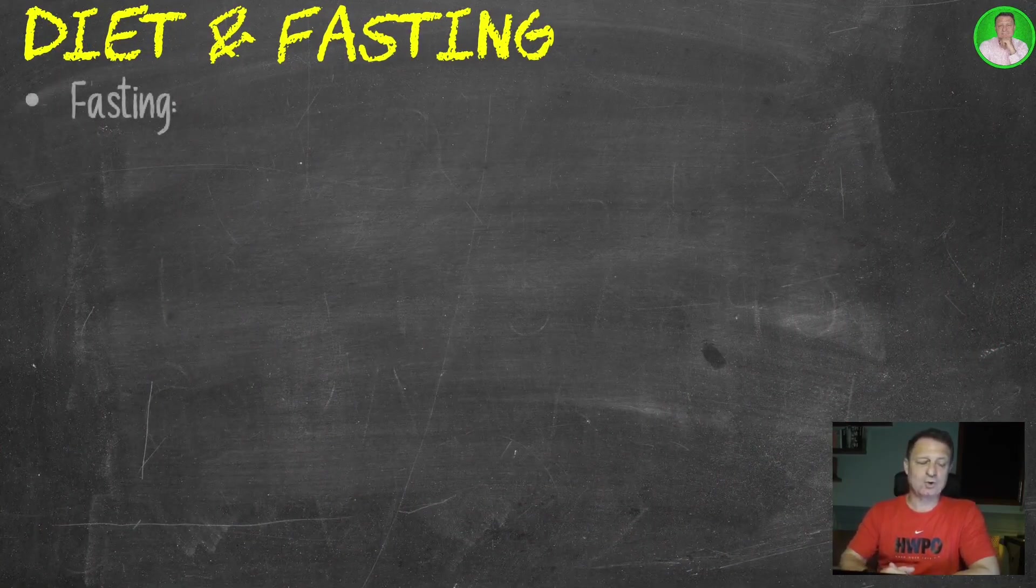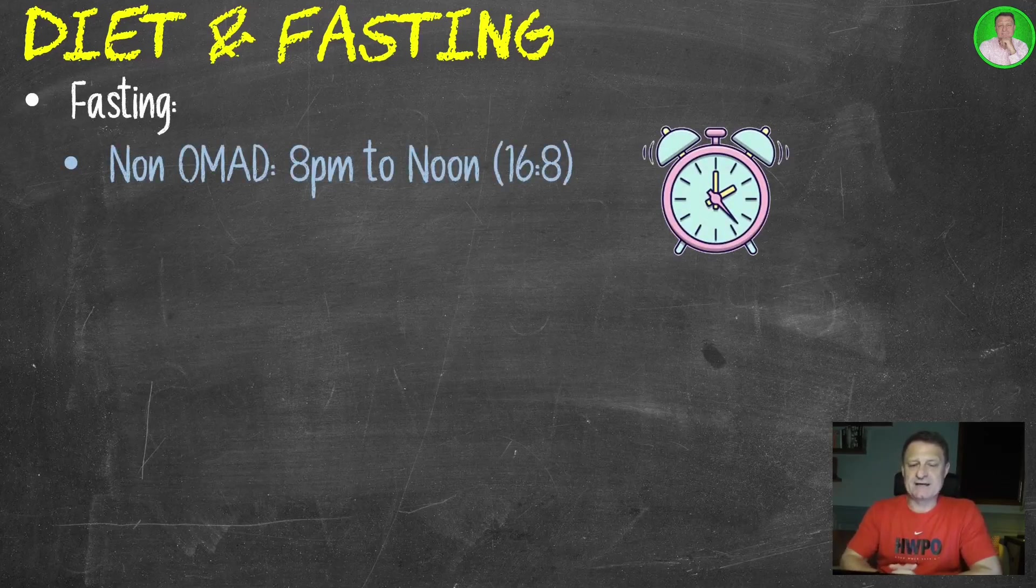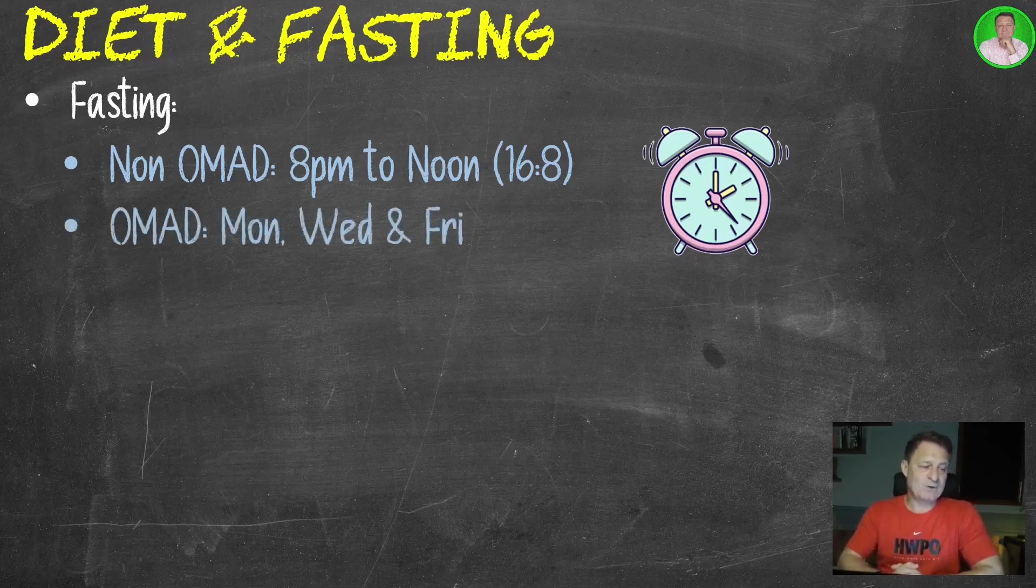Diet and fasting. Let's first of all look at my fasting protocol. On non-OMAD days, that's one meal a day, I'm on the 16-8 protocol. So I'll finish eating at 8 p.m. the night before, and I won't eat then again until about noon the next day. But I'm still trying to push that to 2, 3, 4 o'clock in the afternoon. I'm trying to make every day an OMAD day. On OMAD days, which is Monday, Wednesday, and Friday.